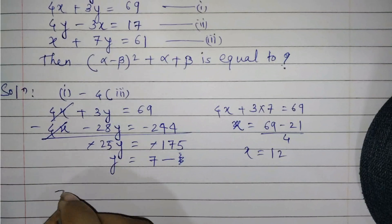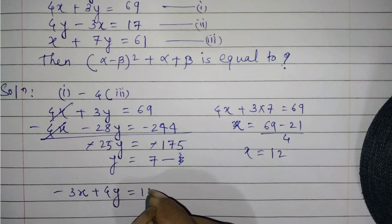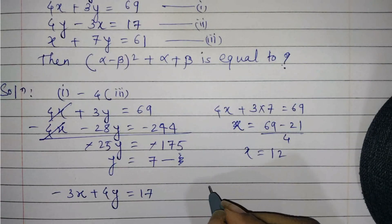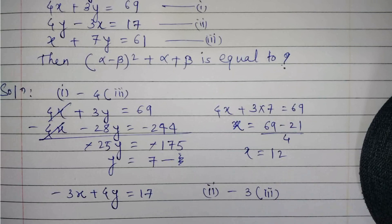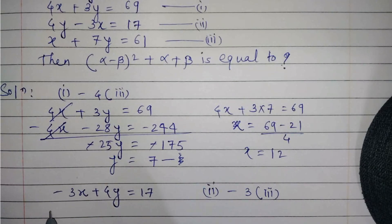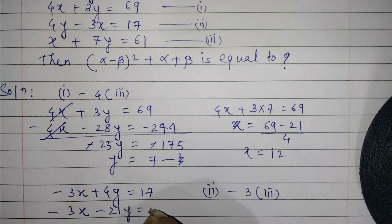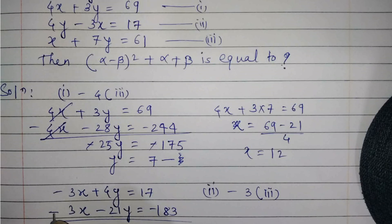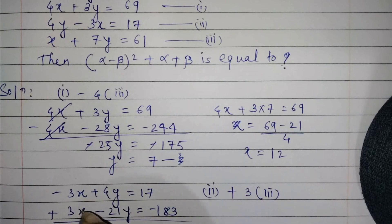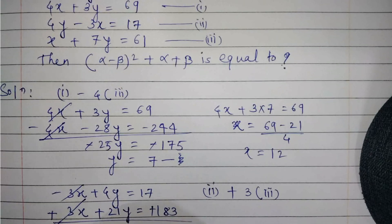Now let us solve the second and third equations. We have minus 3x plus 4y equals 17. We perform the operation: equation 2 minus 3 times equation 3, giving minus 3x minus 21y equals minus 183. Adding these together, the x terms cancel, leaving 25y equals 200.